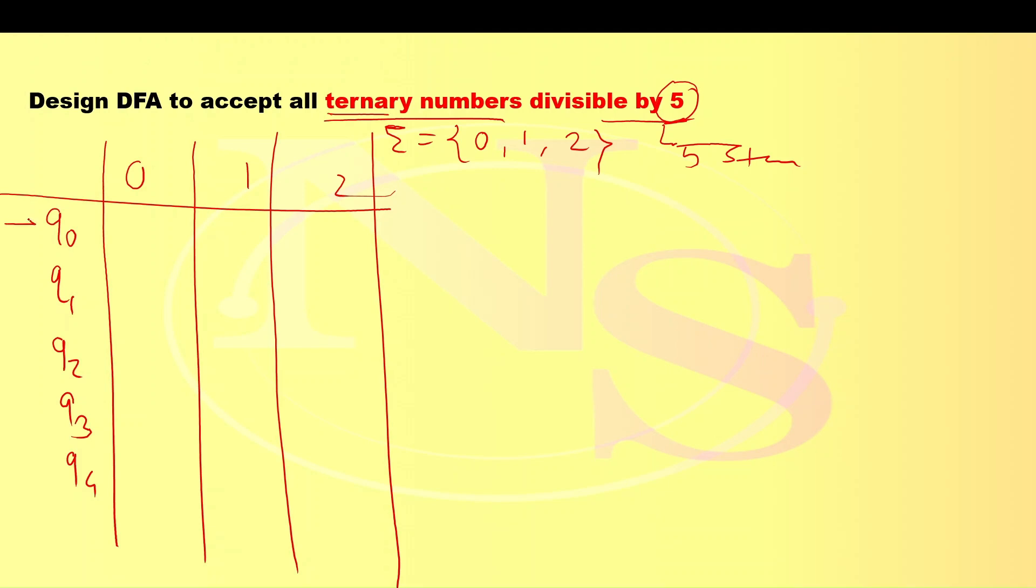Here Q0 will be always starting and final state. Now, how to complete this table? You just need to write down the name of the state row-wise sequentially. First row, start from Q0, next state Q1, next state Q2, next row, next state Q3, Q0, Q1, Q2, then Q3. One more state we have Q4, Q0, Q1, Q2, Q3, Q4.